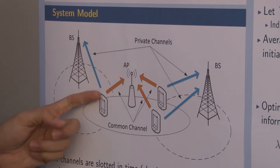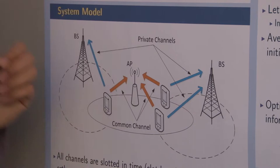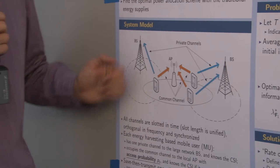One deterministic connection to the large network, and sometimes it can also use this common channel to the access point. But if it has connected to this access point, it can use both channels simultaneously and also do optimal power allocation over these two channels.